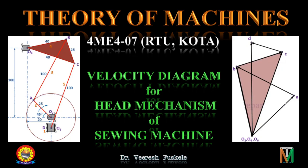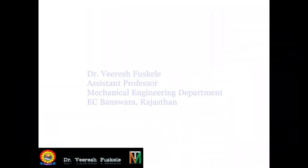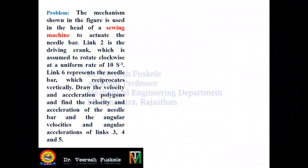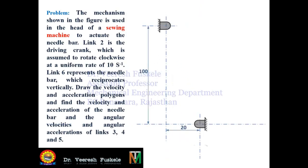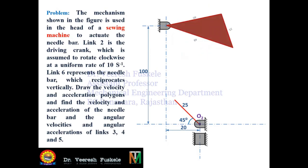The problem statement is as follows: the mechanism shown in the figure is used in the head of a sewing machine to actuate the needle bar. Link 2 is the driving crank, which is assumed to rotate clockwise at a uniform rate of 10 radians per second. Link 6 represents the needle bar which reciprocates vertically.